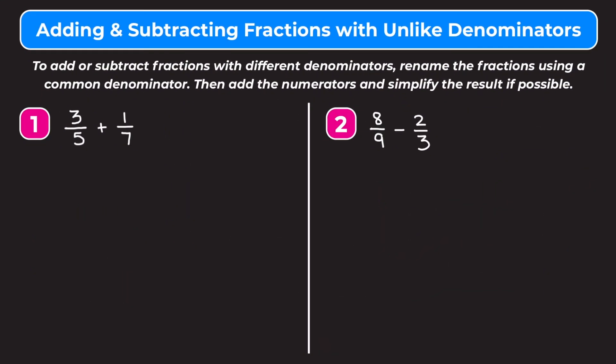In this video we're going to learn how to add and subtract fractions with unlike denominators. The tip at the top of the screen says: to add or subtract fractions with different denominators, rename the fractions using a common denominator, then add the numerators and simplify the result if possible. I'll explain what all that means once we start looking at example 1.